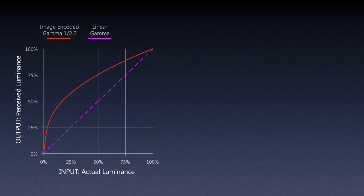If your camera captures and immediately converts to JPEG or TIFF using sRGB or Adobe RGB, it also does the same thing. Depending on the output, it will use a gamma typically encoded as gamma 1 divided by 2.2, which looks like a curve similar to the way human eyes see.